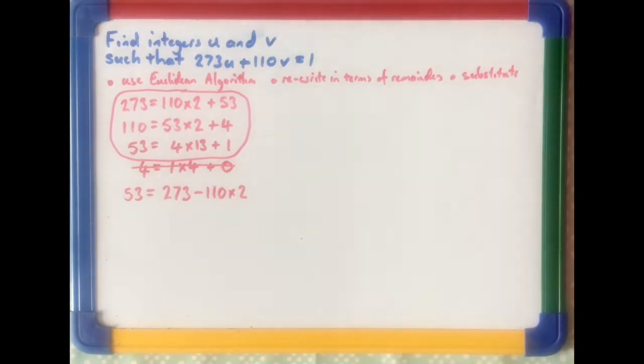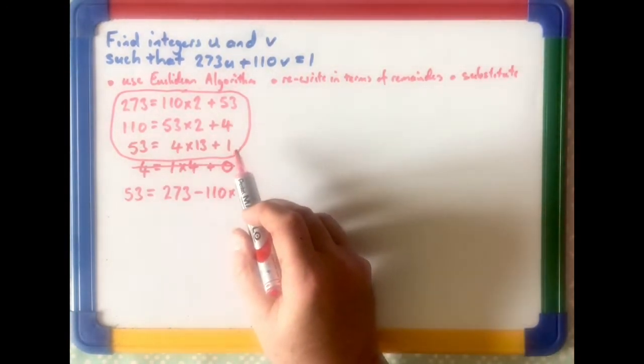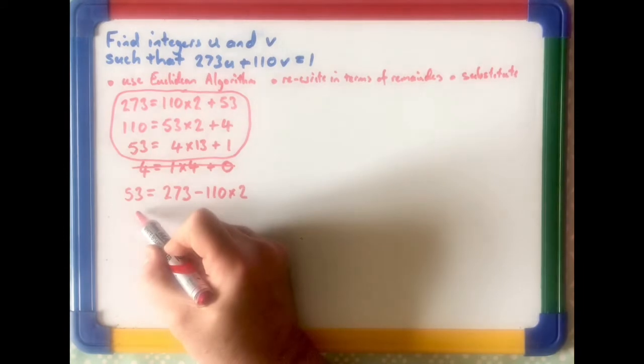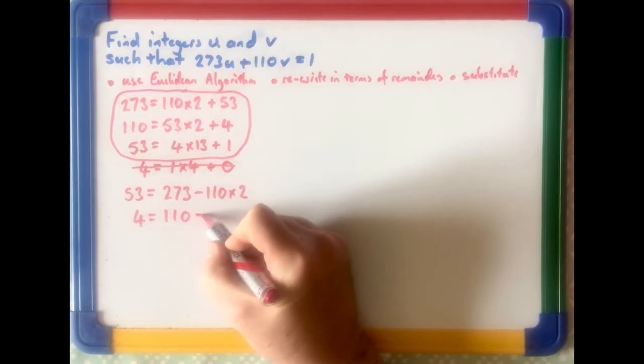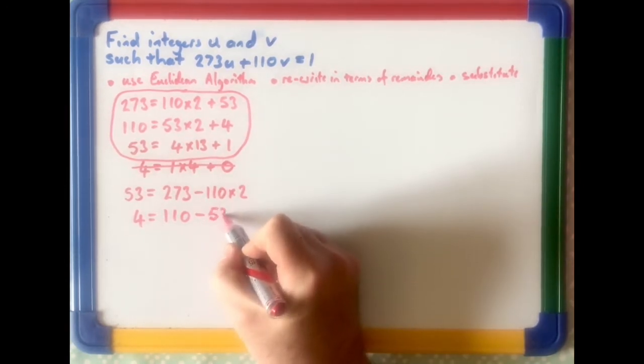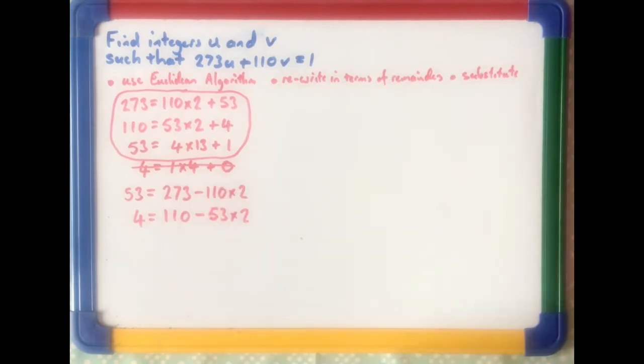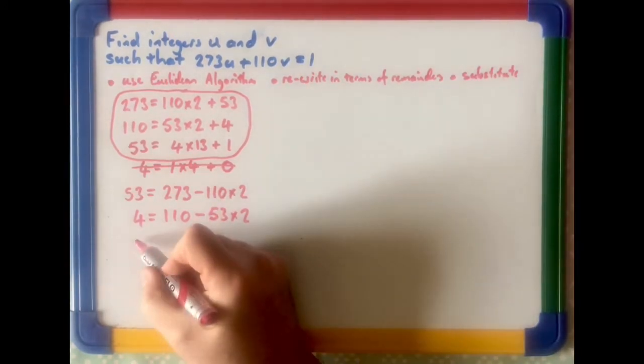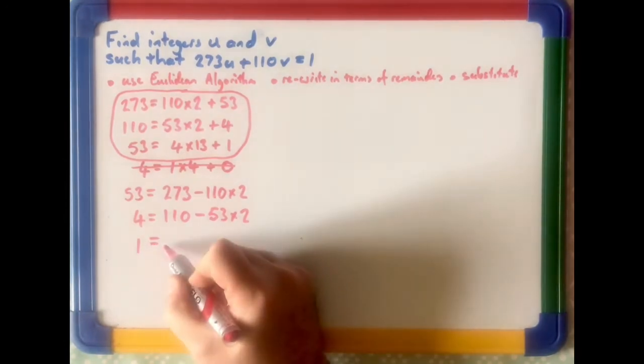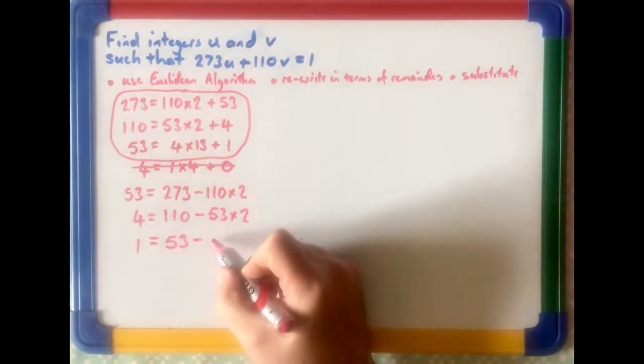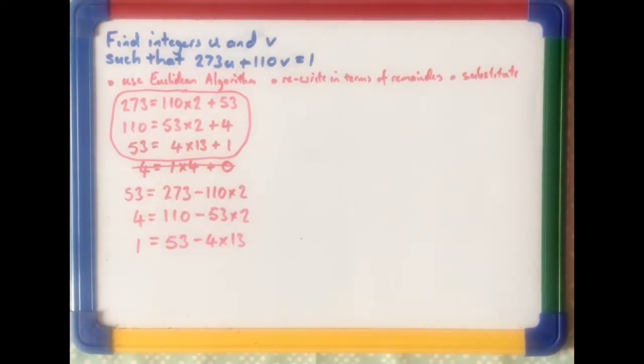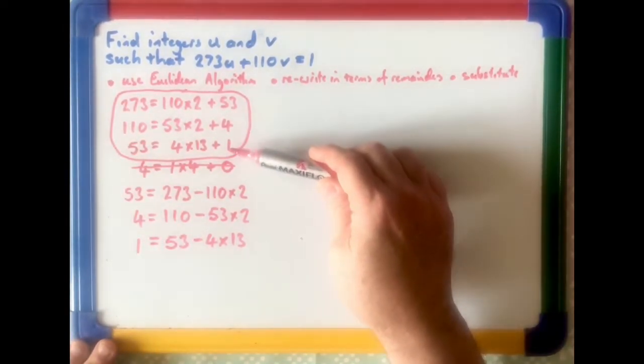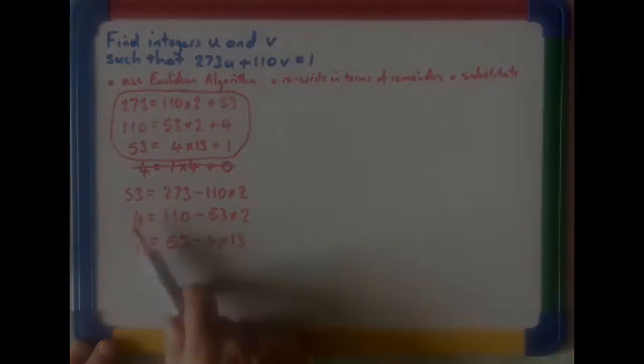The next one, if you look at it, the remainder is 4, so 4 is equal to 110 minus 53 times 2. And the last one, if you write it in terms of the remainder, is 1 equals 53 minus 4 times 13. That's just those three written in terms of the remainder, in terms of 1, 4 and 53.